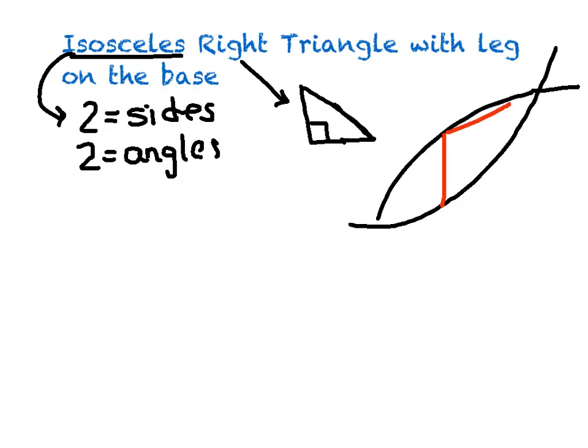Try to picture this coming out at you in 3D. This is the base there, going across the bottom. Again, I'll have a better visual in class. I can't stress enough — I think it's a no-brainer if you draw out the picture to describe it. So let's go ahead and draw an isosceles right triangle with the leg on the base.